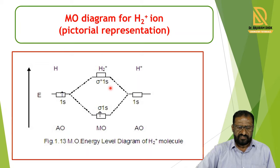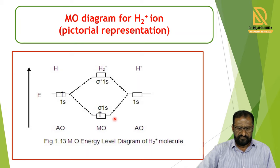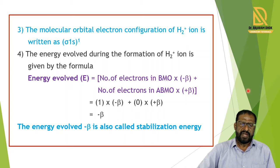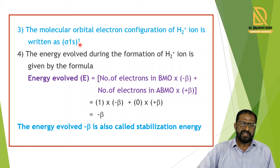In these two atomic orbitals, the total number of electrons is only one. This electron is filled into the sigma 1s orbital, and the sigma star 1s orbital remains empty. There is no necessity to write the empty sigma star 1s orbital in the electronic configuration.